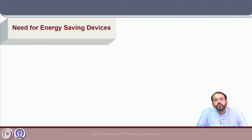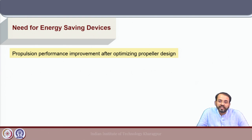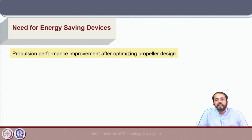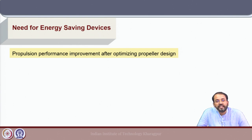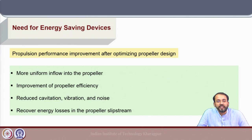First, we need to understand why we need these energy saving devices and their implication in the shipping industry. The propulsion performance for a ship is optimized with respect to hull and propeller geometry. Based on the ship design, its operation conditions, and powering requirements, a propulsion system is designed using conventional or unconventional propulsors. Certain improvements in propulsion performance can be obtained even after optimizing the propeller design, related to hydrodynamic advantages from additional devices in and around the propeller behind the ship.